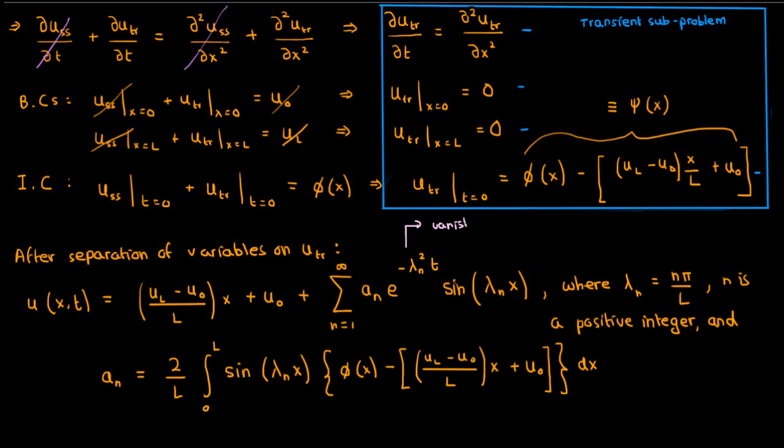Notice that as time approaches infinity, this exponential in the transient solution vanishes, and the entire transient solution goes away, and we're just left with the steady state straight line.